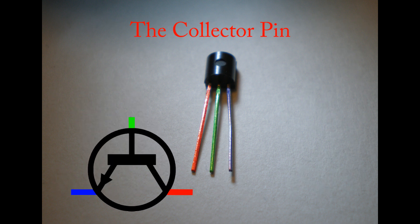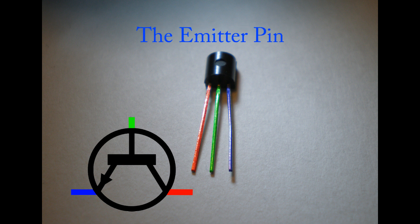The Collector pin, shown in red, is where the transistor gets the current that it uses to amplify what's coming in on the base pin. The base pin is where the base current is inputted. The base current is the current that will be amplified. The emitter pin is where the amplified current comes out.